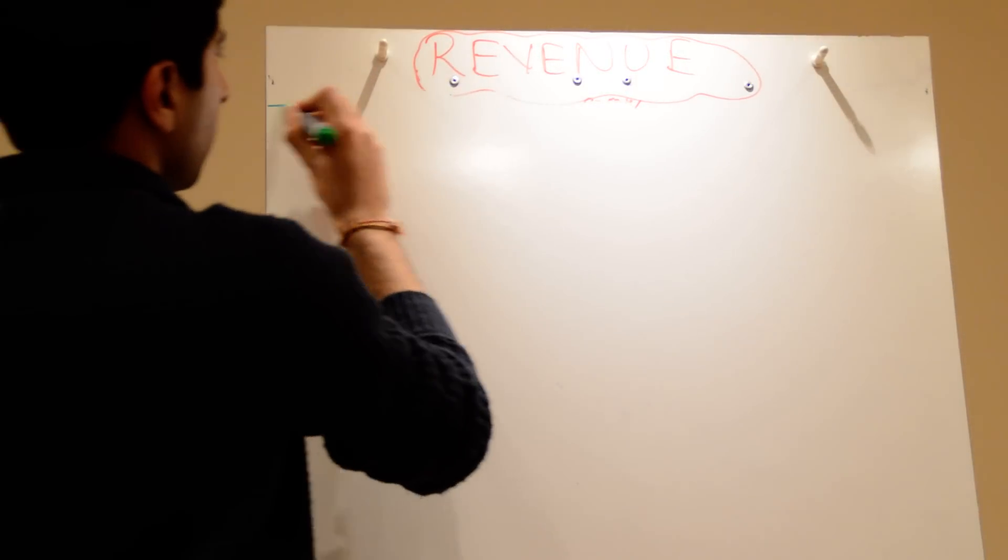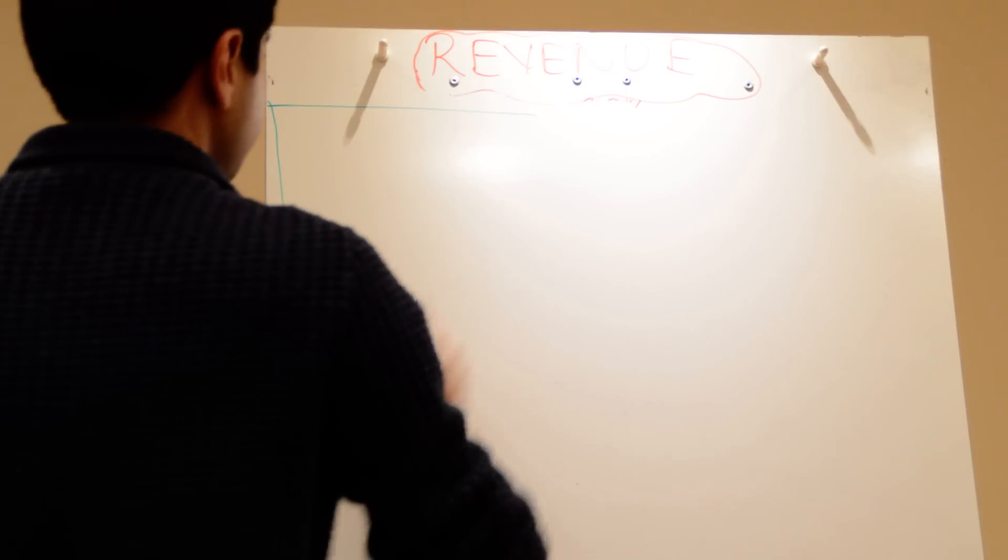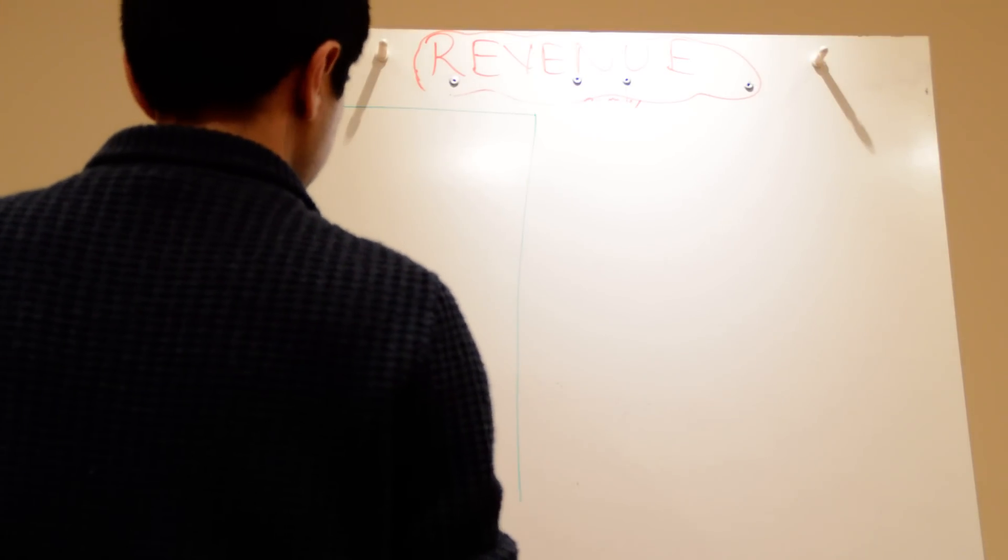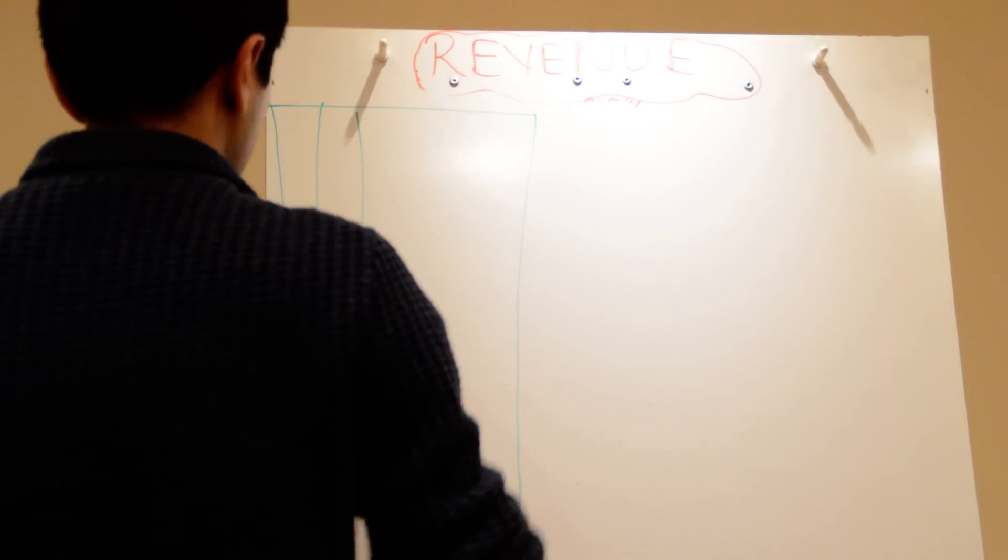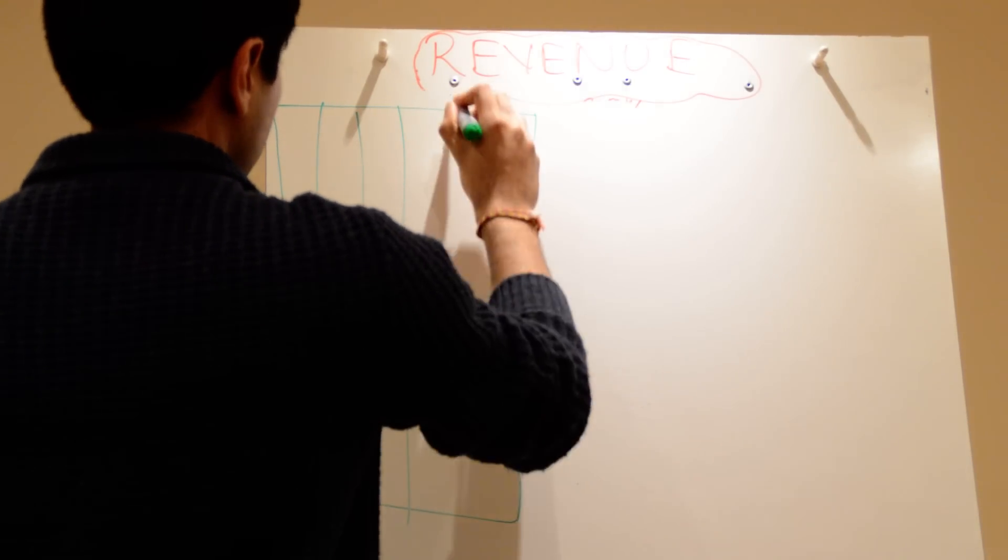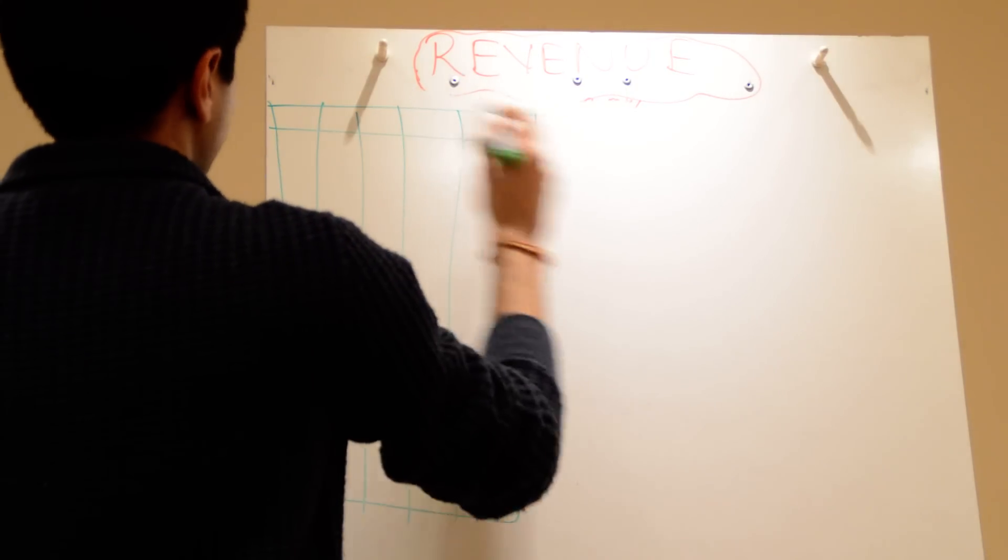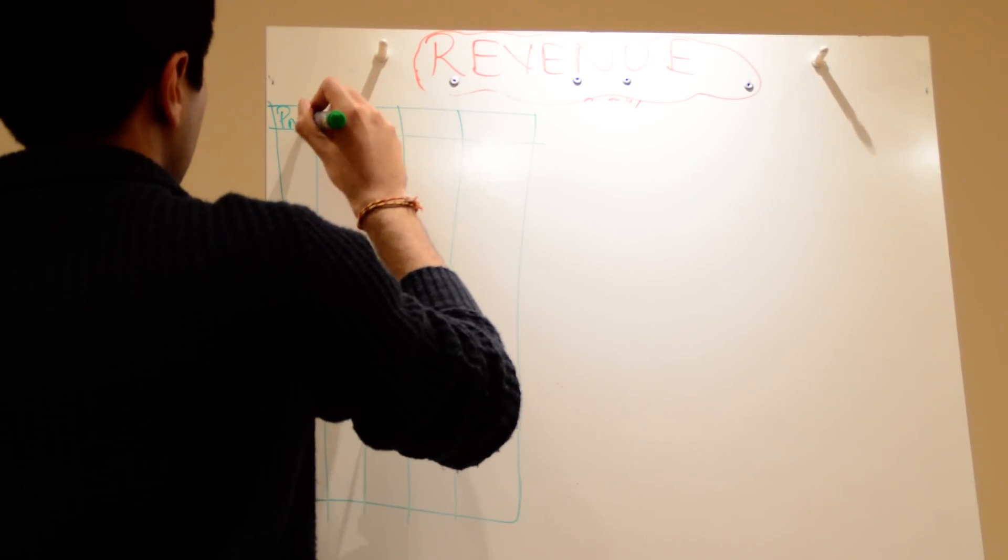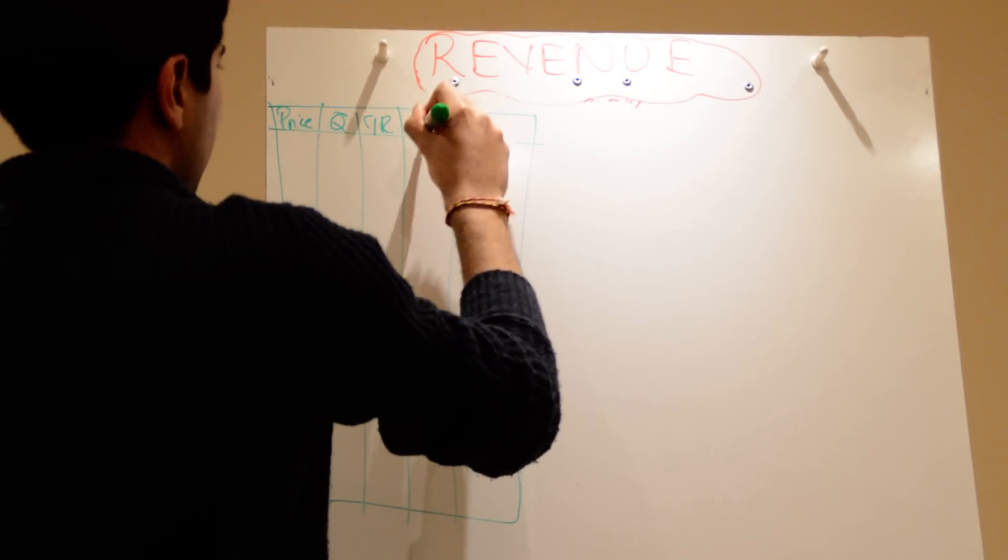So again let's just draw a quick table. We're going to have our price, quantity, total revenue, average revenue and marginal. So I just write price, Q, TR, AR and MR. We're going to have now a range of prices.